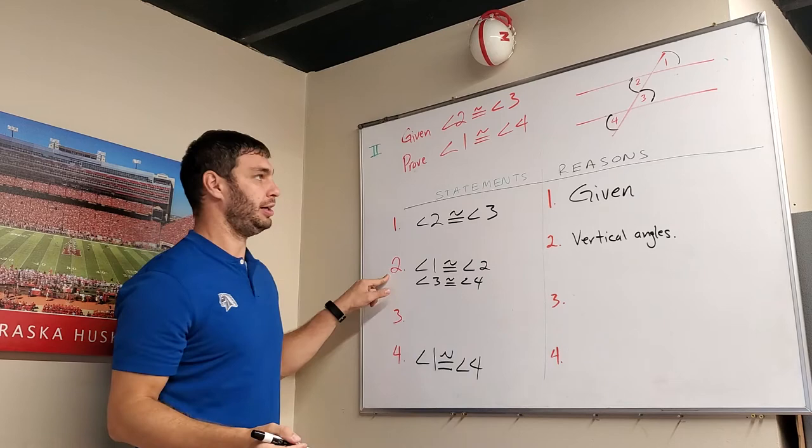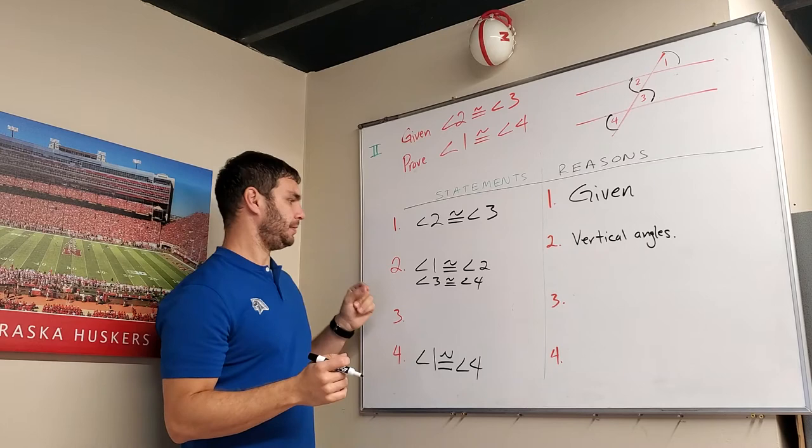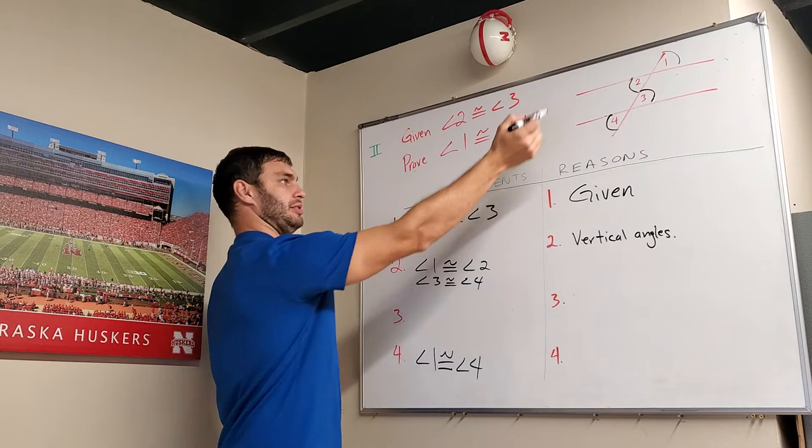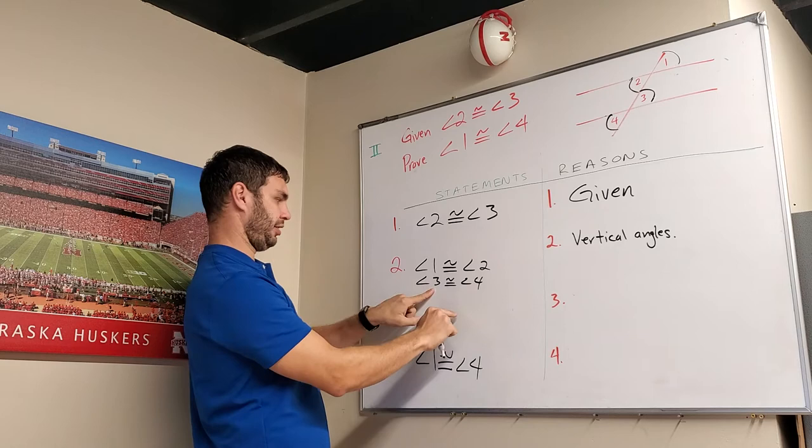So what else do I know? Based off of this, I'm seeing that what about 4 and 2? 4 and 2, they're congruent. And I know that because I can substitute it in, right?